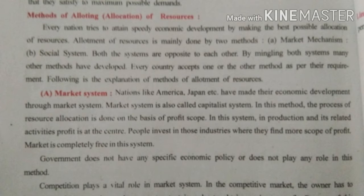The market is completely free in this system. There is no government interference. Government does not have any specific economic policy or play any role in this method. The market system is called the capitalist system. Profit is the main aim, and people invest only where they find maximum profit. Whenever the main aim is profit, competition plays the most important role.